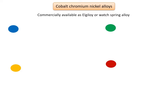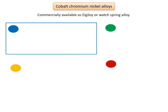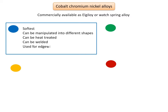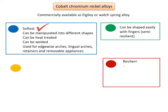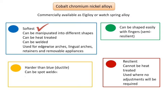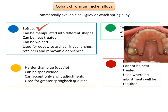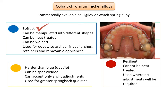All four Elgiloy tempers have the same composition, but differences in mechanical properties are due to variations in wire processing. Blue is the softest — it can be manipulated into different shapes, heat-treated, and welded; it is used for edgewise arches, lingual arches, retainers, and removable appliances, and is the most commonly used in orthodontics. Green can be shaped easily with fingers and is semi-resilient. Red is resilient, cannot be heat-treated, and is used when no adjustments will be required. Yellow is harder than blue, can be spot-welded, accepts only slight adjustments, and is used for greater spring back qualities. A clinical use of Elgiloy blue is fabrication of the fixed lingual quad-helix appliance for low maxillary expansion in treatment of maxillary constriction.